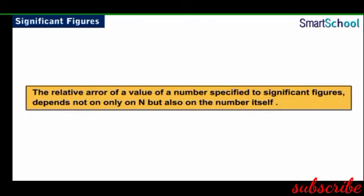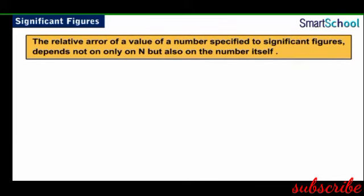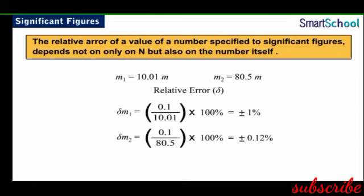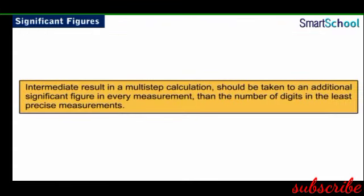Rule number 2 says that the relative accuracy of a value specified to n significant figures depends not only on n but also on the number itself. If there are two quantities, say 10.01 m and 80.5 m, both carrying an error of 0.1 m, then the relative error in 10.01 m is ±1%, while the same for 80.5 m is 0.12%. An important point to remember is that intermediate results in a multi-step calculation should be taken to an additional significant figure beyond the number of digits in the least precise measurement.